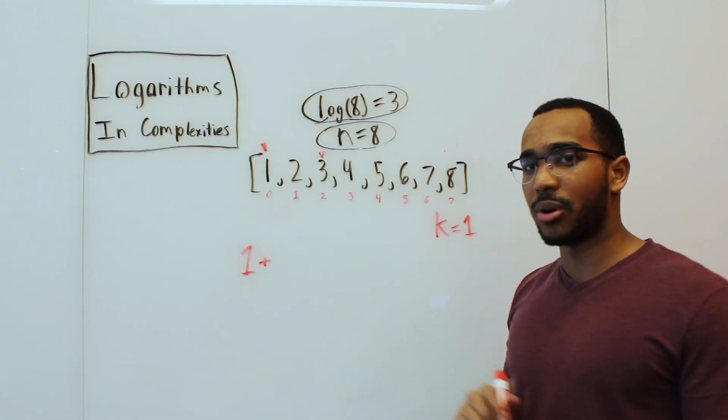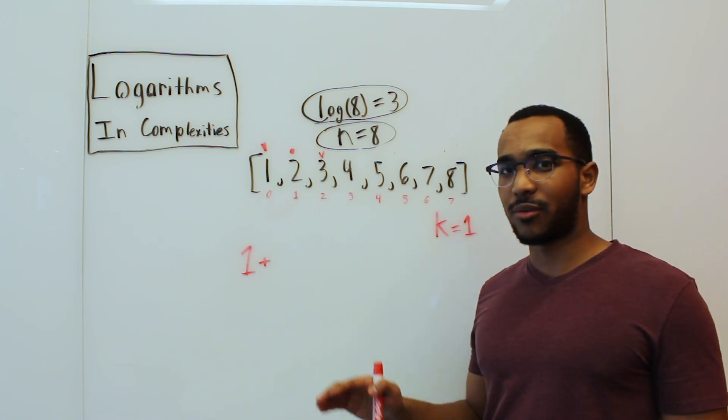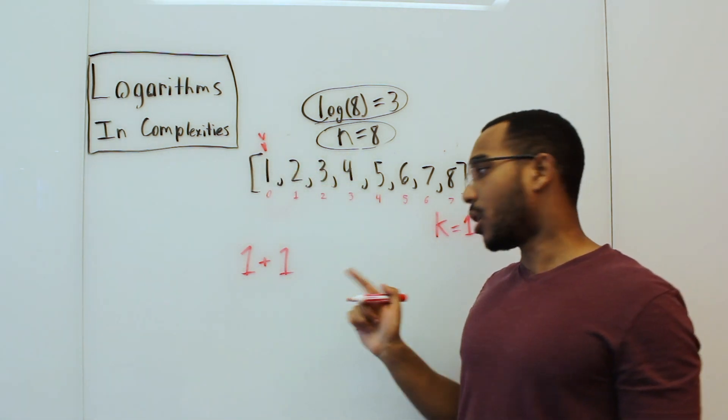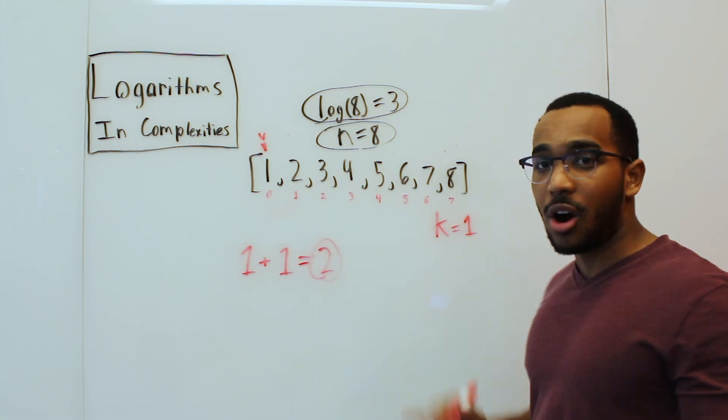Now let's find our new midpoint. Is two the number we're looking for? Two is not the number we're looking for, so we need to keep going left. And we found the item one. So we performed a total of two halving operations to find our item k.